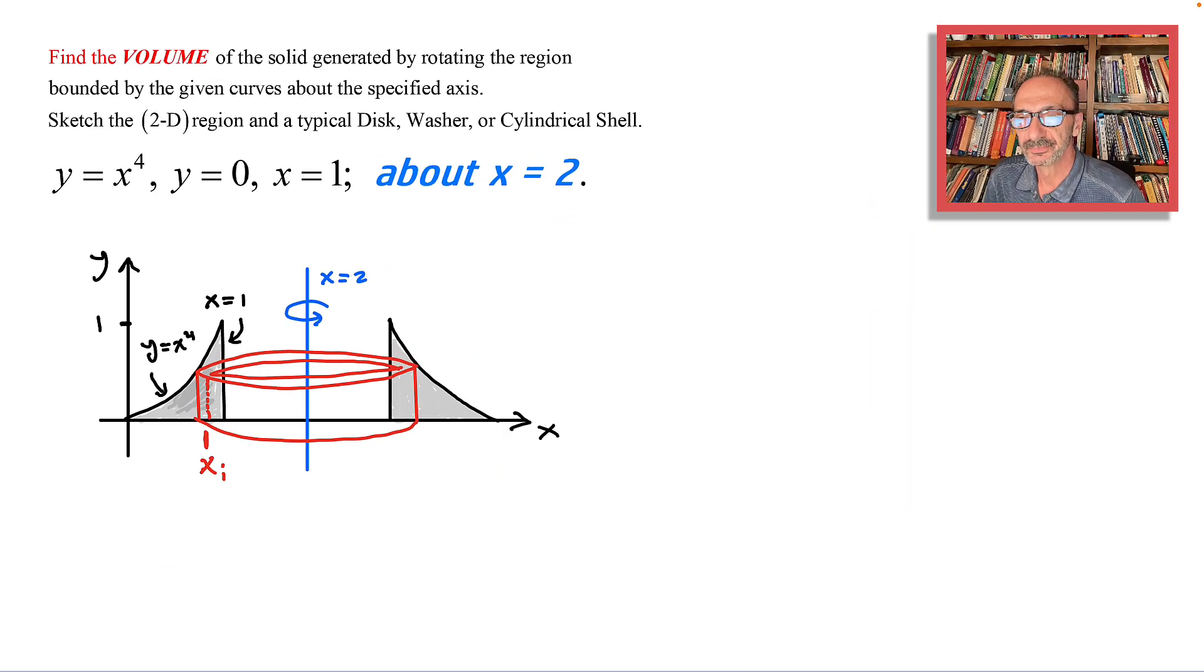Let's get started. To find the volume we need to see first the two-dimensional region between our bounds, which is the function y equals x to the 4, just like x to the 2nd. y equals 0, that is the x-axis, and x equals 1, that's this line right here, x equals 1.